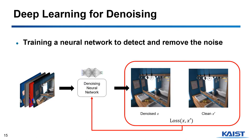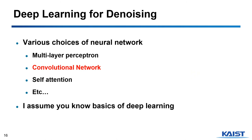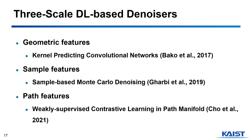Recent deep learning methods remedy the human bias problem. A neural network is trained from a large dataset with about hundreds of scenes to denoise the noisy input. There are various choices of networks, while applying a convolutional network is the popular choice in the vision field. I assume all of you are familiar with the concepts of deep learning and convolutional networks as we talked about it in the zoom session, so I will move on. I will now introduce three denoising neural networks, each utilizing one of the three scales of auxiliary features.